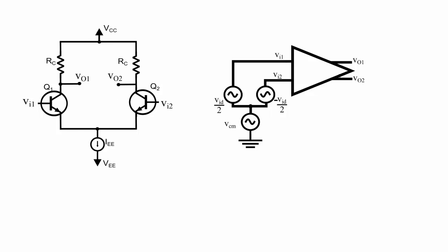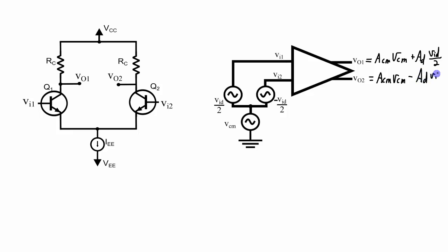First, let's convert this differential amplifier into just a general form. I've connected inputs onto this differential amplifier: my differential inputs VID over 2 and negative VID over 2 going into my two inputs, and I have the common mode input that is common to both VI1 and VI2. Over here at the outputs, I've got VOUT1 and VOUT2.